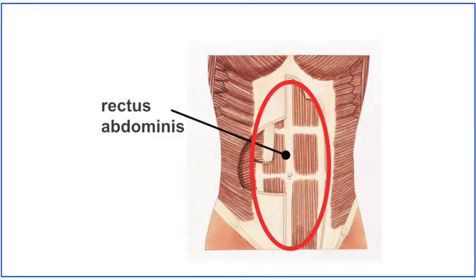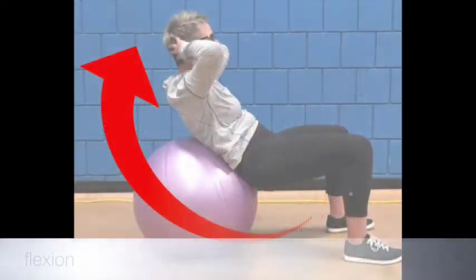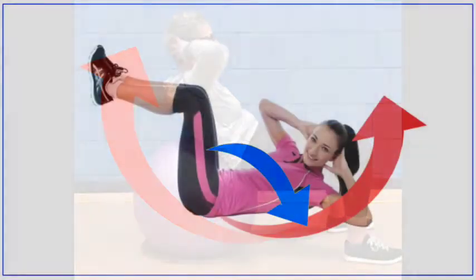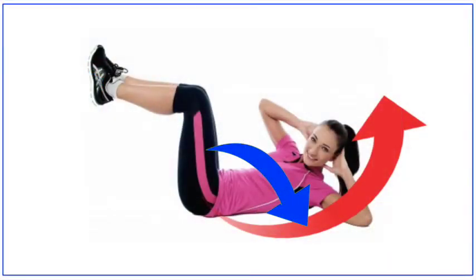The rectus abdominus muscle is the one that everyone thinks of when talking about the abs or the six-pack. It attaches to the ribs and pelvis and is situated over the front of the abdomen. The regular abdominal crunch exercise is an example of the rectus abdominus generating force concentrically to flex the spine. This abdominal crunch with a twist involves spine flexion and spine rotation, so it engages the rectus abdominus as well as the internal obliques and external obliques.